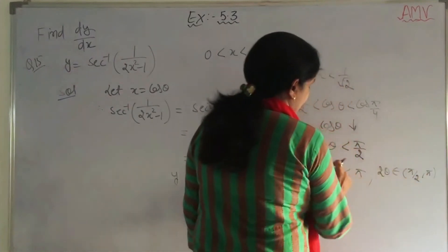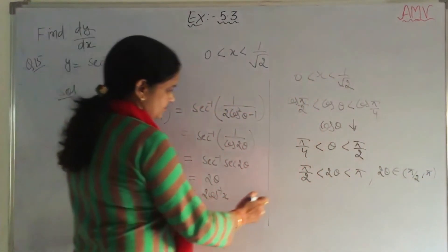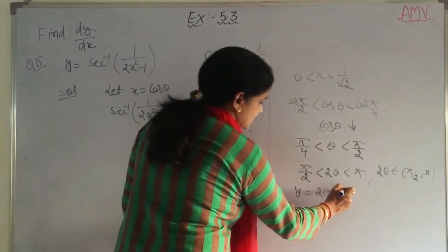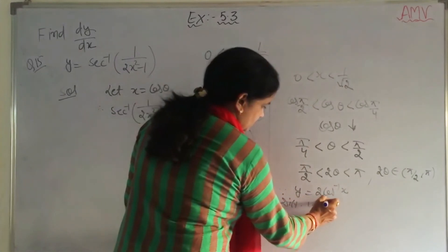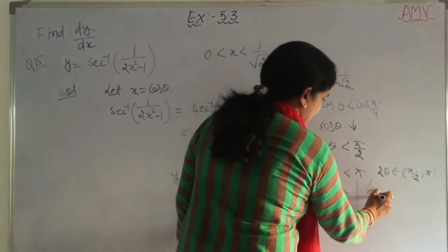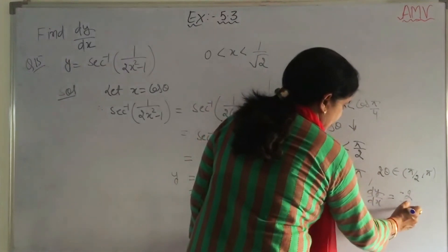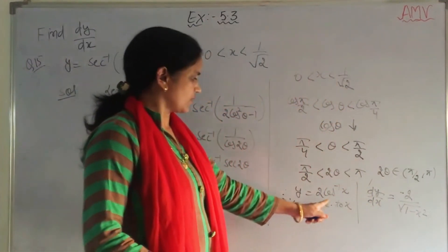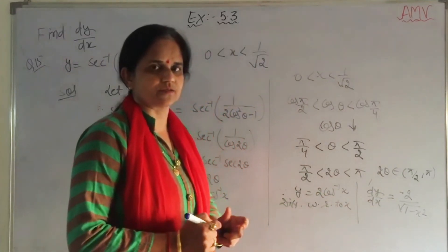Now find the derivative. Y is equal to 2 cos inverse x, so differentiating with respect to x, dy by dx equals minus 2 by under root (1 minus x square). The derivative of cos inverse x is minus 1 by under root (1 minus x square).